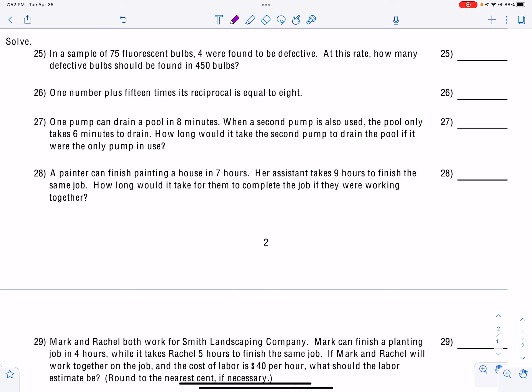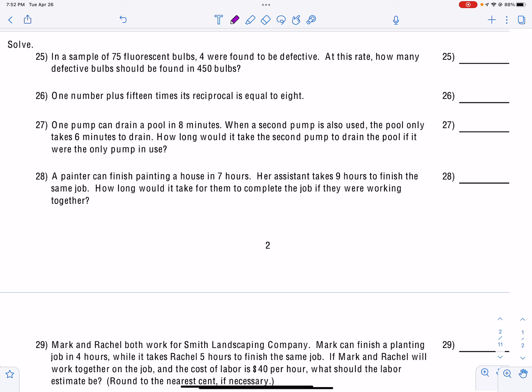In these problems, we're going to be doing rational equations, so we have to be able to set up these equations. The first one is going to be a proportion. We want to remember how to set up a proportion comparing two things. We want the sample number of bulbs over the defective. So when we set up this relationship, we will have 75 in the sample and 4 were defective. And now we want to know if we have 450 bulbs in the sample, how many would we find to be defective?